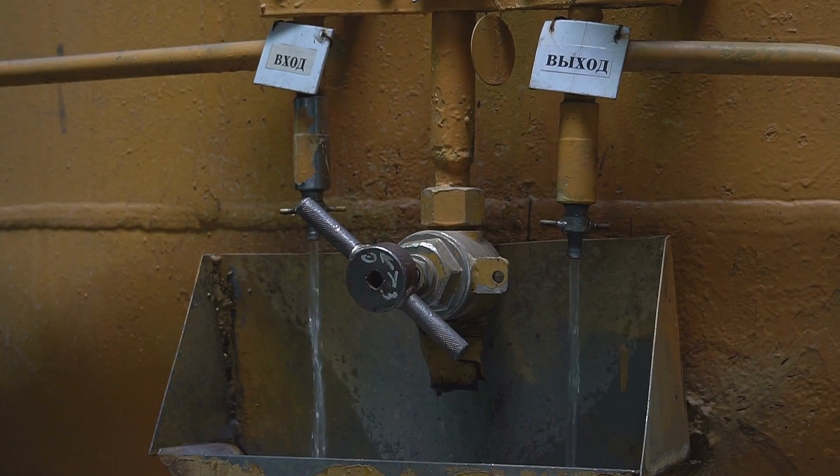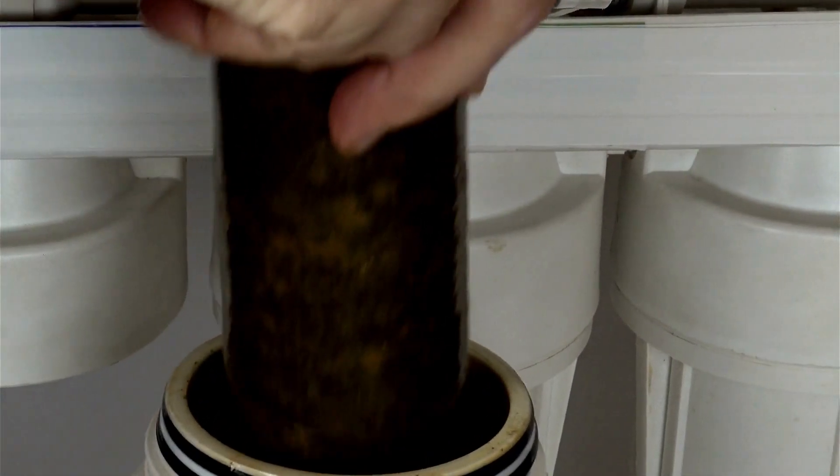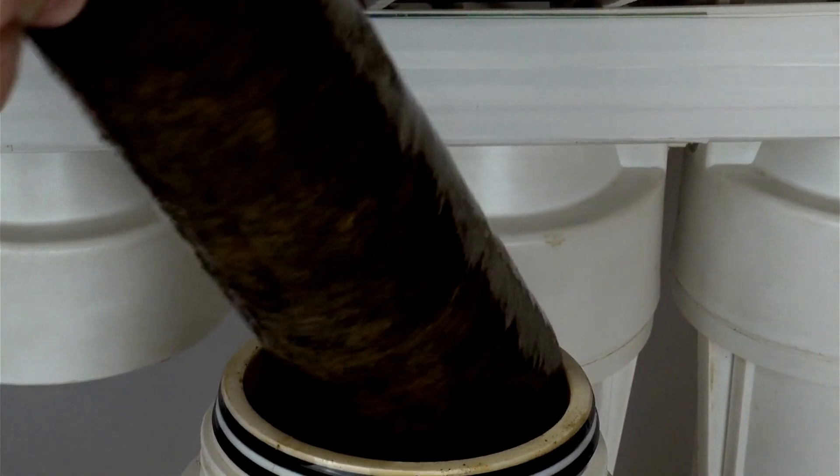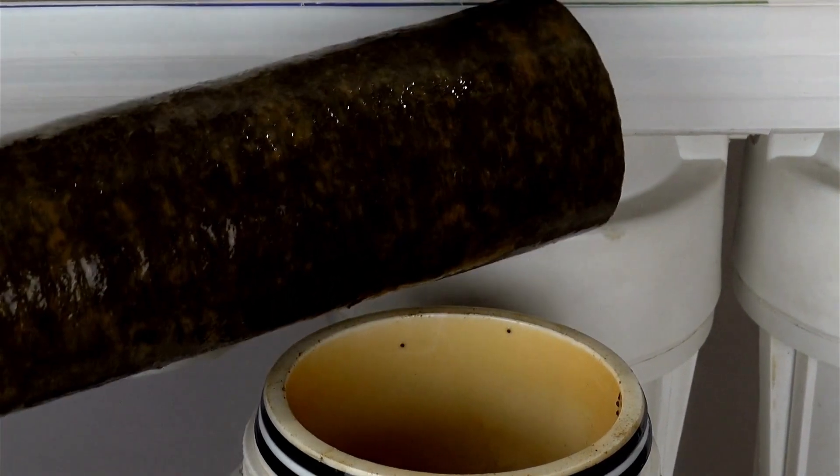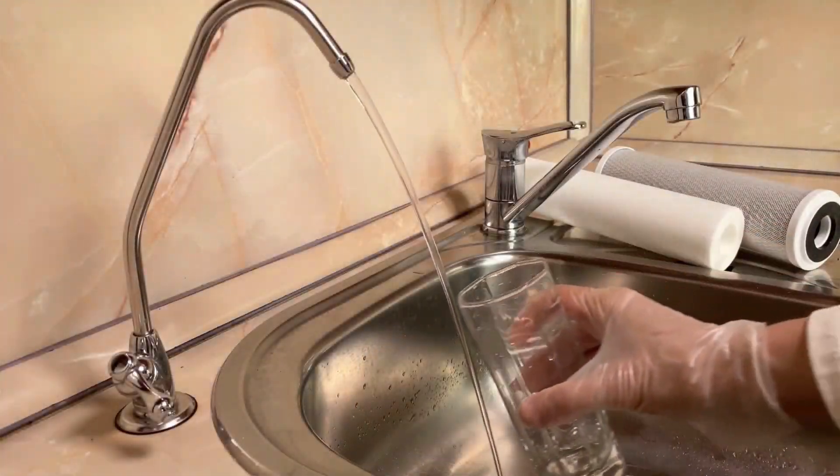Now, let's talk about the different flushing methods you can use for reverse osmosis membranes. The most common method for home use is forward flushing. With this method, water flows over the membrane to sanitize it.